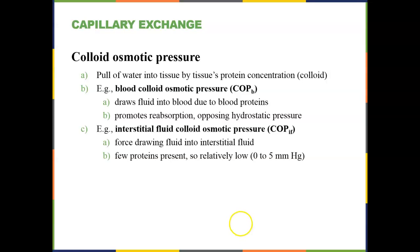As fluid leaves on the arterial end, on the venous end we have a higher protein-to-fluid ratio than on the arterial end, and so that's going to promote reabsorption on the venous end. Interstitial fluid is going to have a lower colloid osmotic pressure, so there's not going to be as much pull of fluids by the proteins. And as we increase the amount of fluid in the interstitial regions, that colloid osmotic pressure would drop even lower.